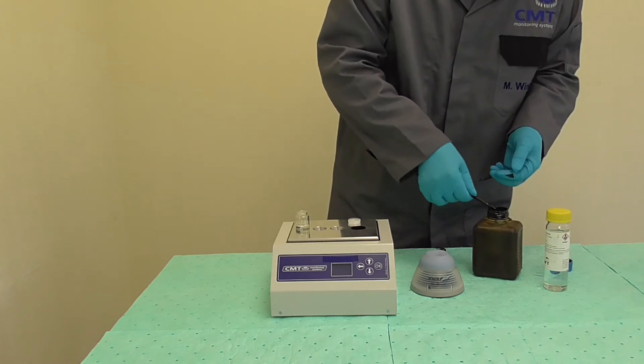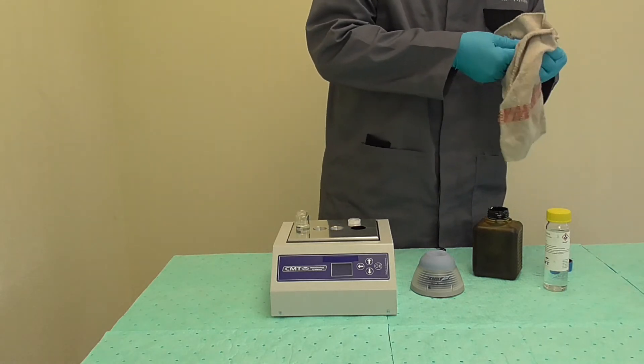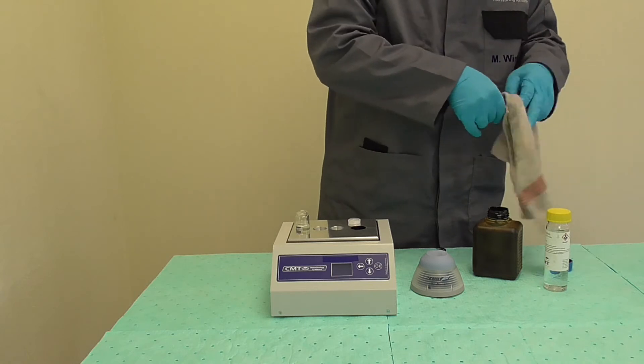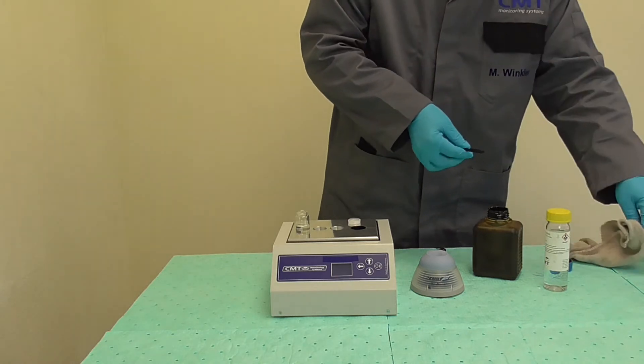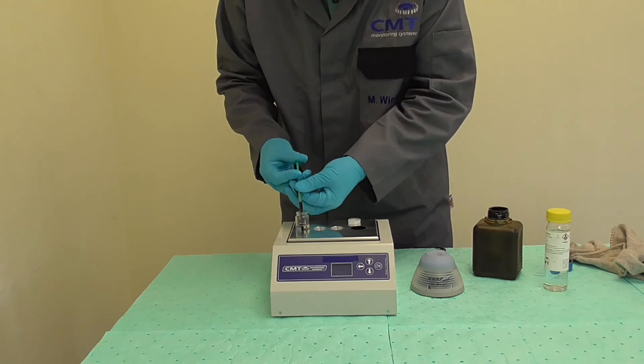Empty the syringe and refill it again a few times. Wipe off the syringe from outside with a cotton rag before you add the fuel to the vial you filled before with reagent J.